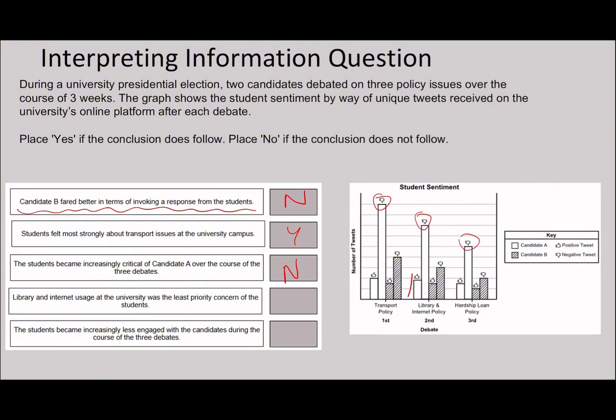Library and internet usage at the university was the least priority concern for the students. I'd say it's probably the hardship loan and policy actually. Just eyeballing it roughly, you can see that this in total, if you added up each of the individual bar charts, is going to be less than this one. So that's no there.